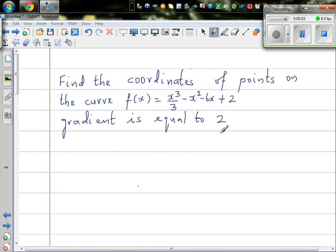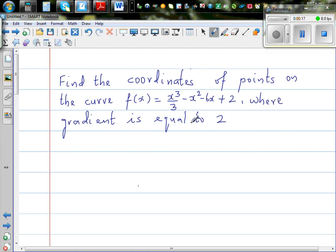Find the coordinates of the points on the curve f of x is equal to x cubed over 3, minus x squared minus 6x plus 2, where the gradient is equal to 2.